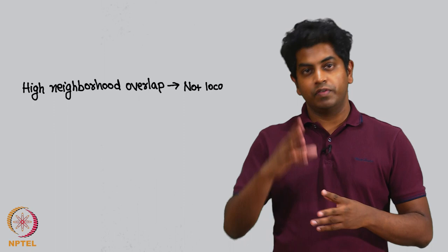What we will look at are the local bridges. A proxy for local bridge, a better definition would be neighborhood overlap. We look at the neighborhood overlap of an edge. If it is higher, then it's a local bridge. If it is lower, then it's not a local bridge. If the neighborhood overlap is very small, then it comes close to being a local bridge.